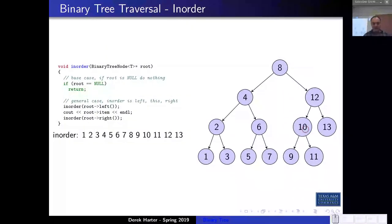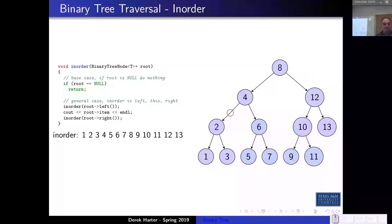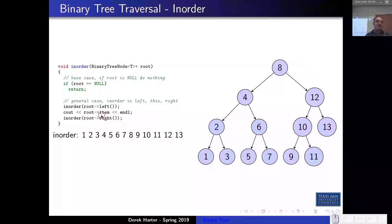One thing I want to briefly mention is tree traversal. It's not too hard to implement, and these would almost always be implemented using a recursive function. For an in-order traversal, the base case is when you get to a null node — you're done and just return immediately.